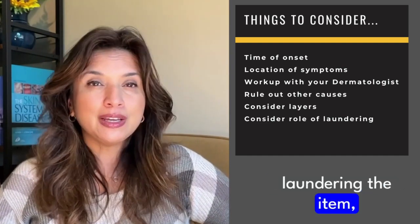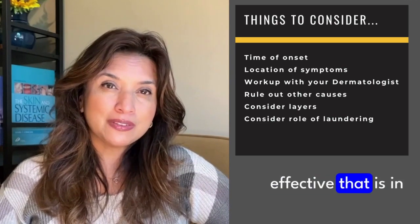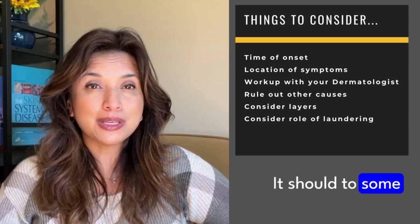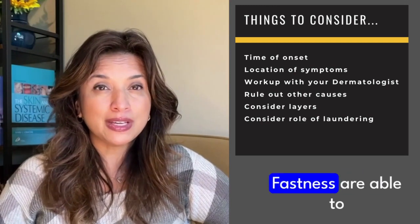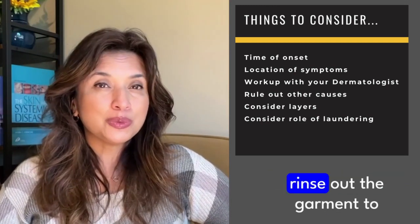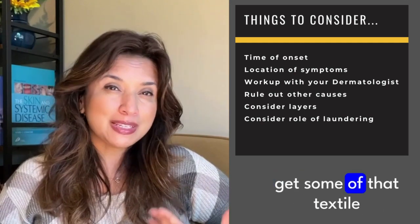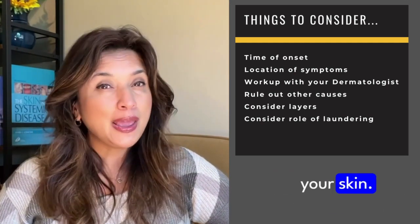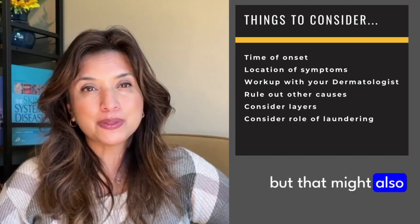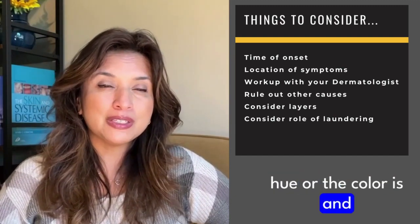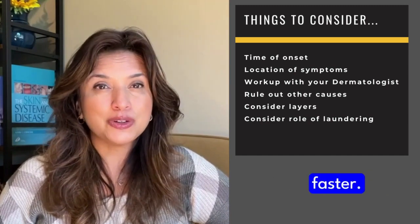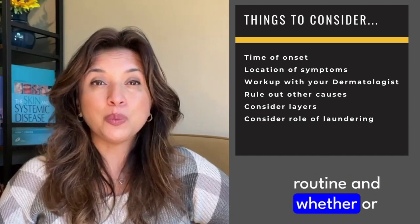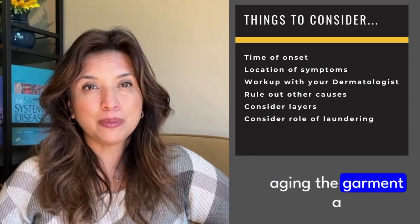It's hard to say how effective laundering is at reducing the textile dye load, but it should help to some extent since much of this is based on color fastness. Rinsing out the garment can remove some of the readily releasable dye, though it may also cause the color to fade faster. Consider the role that clothing item plays in your daily routine and whether you can get away with aging the garment a little bit faster.